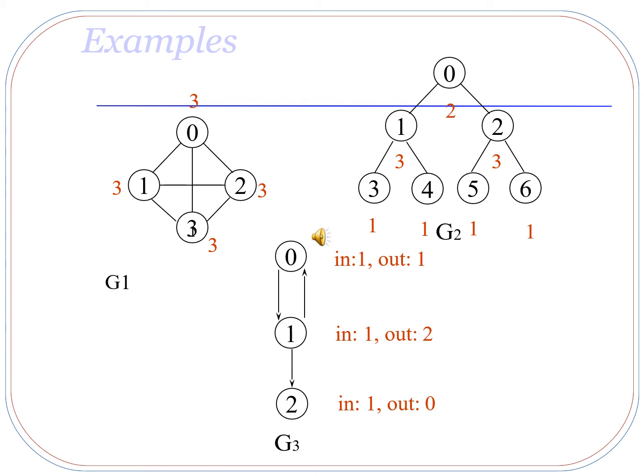Node 0 has two edges incident on it: one from node 1 and another from node 2. The degree of node 1 is 3 because there are three edges incident on it — one from 0, one from 3, and another from 4. The degree of node 2 is 3, with three edges incident on it from nodes 0, 5, and 6. The degree of nodes 3, 4, 5, and 6 is all 1 because there is only one edge passing through each of them.